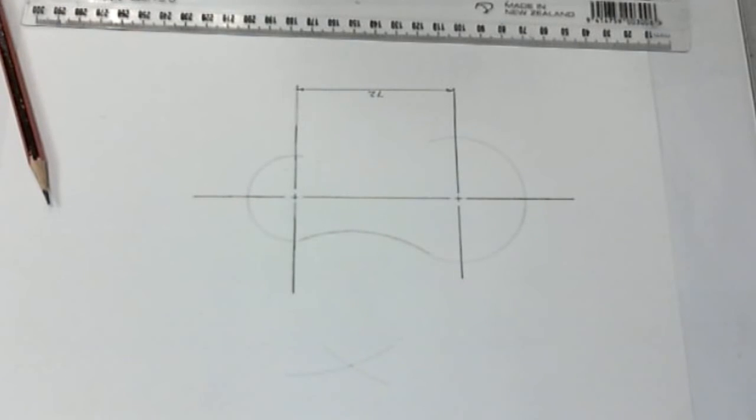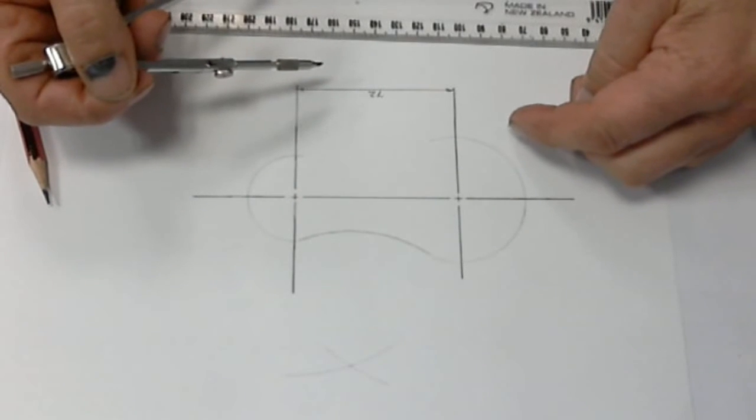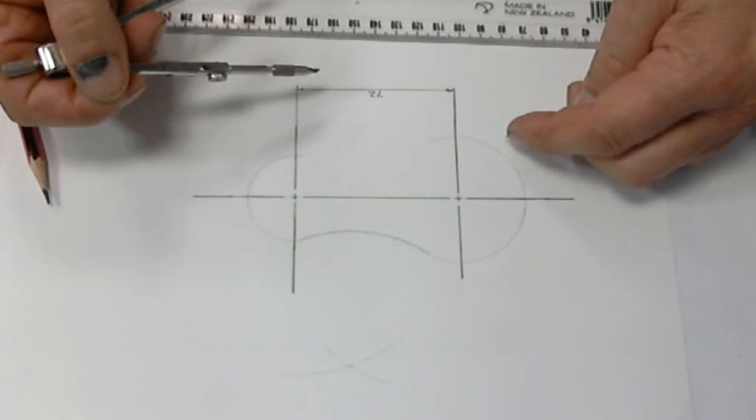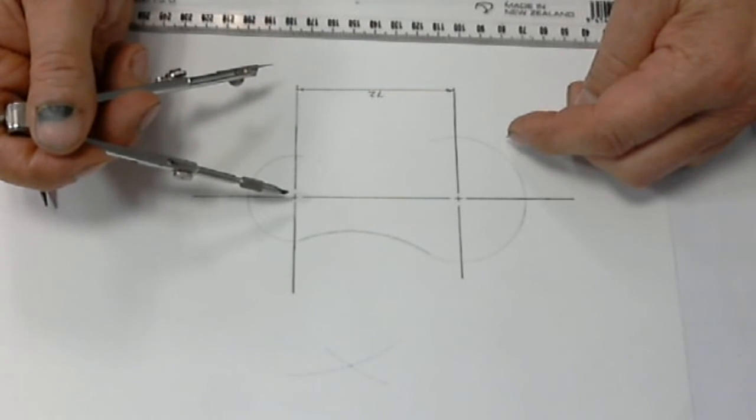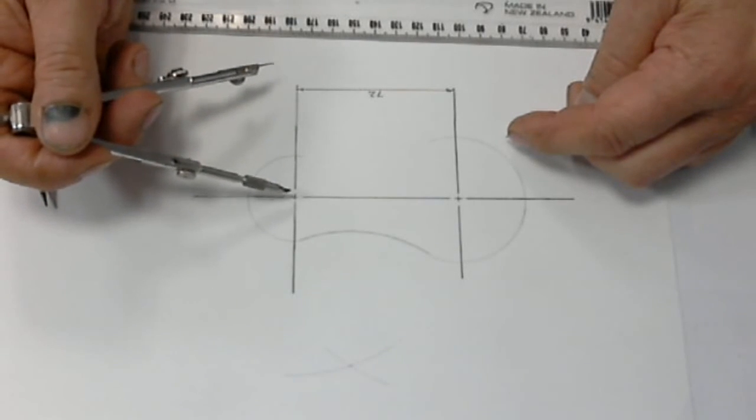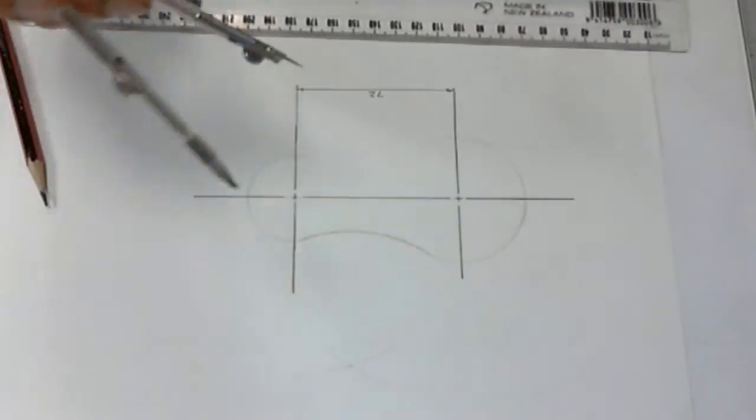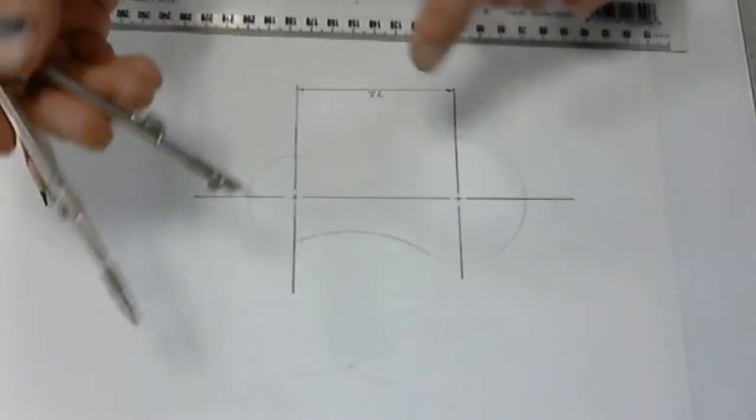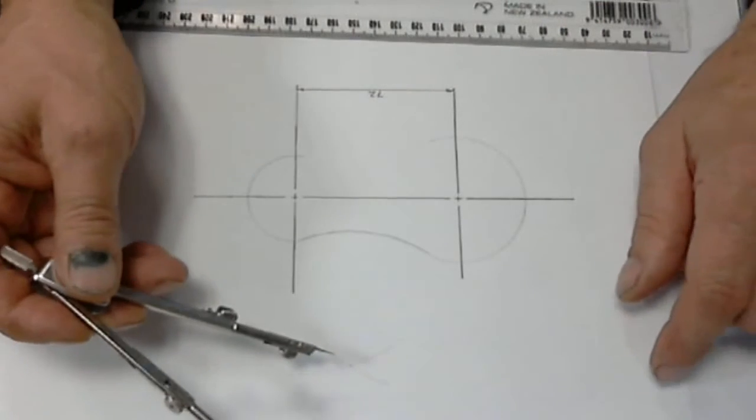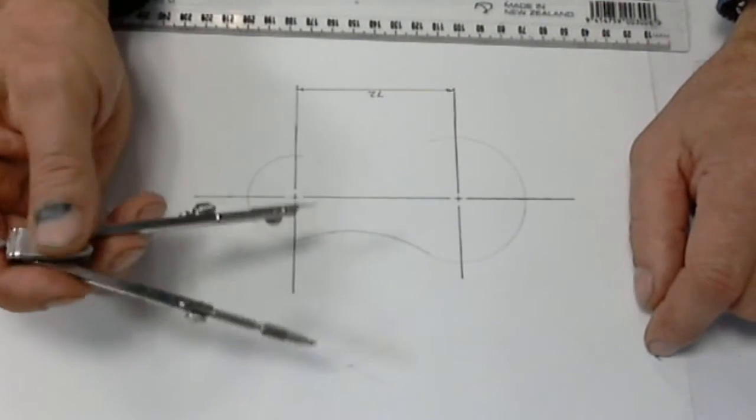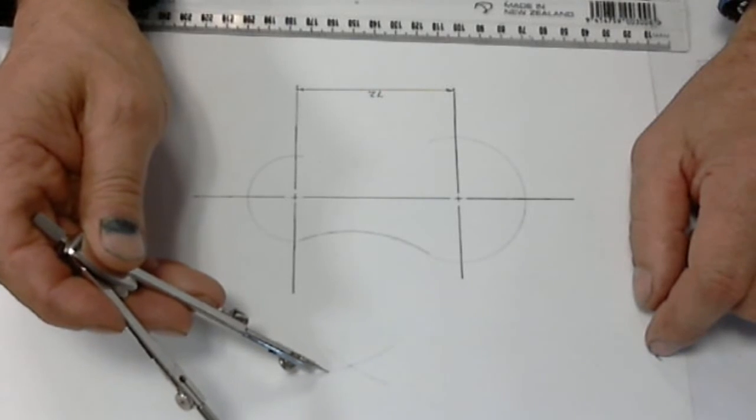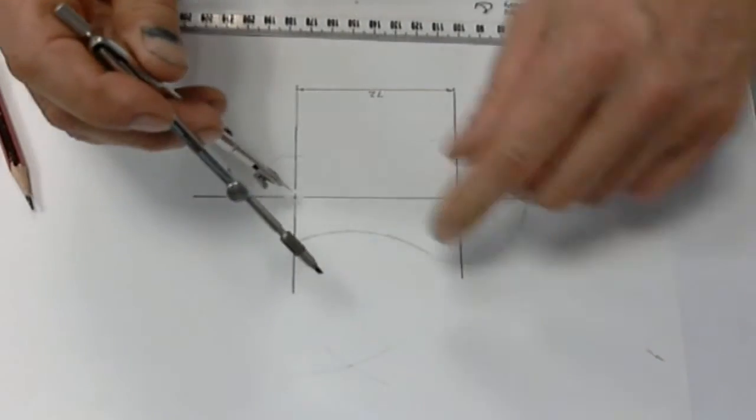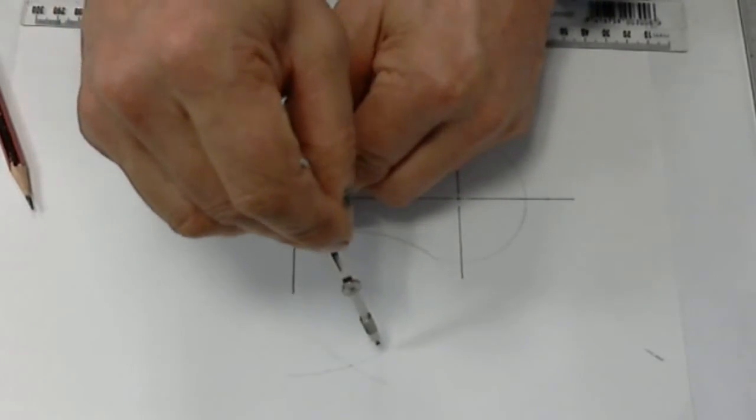Okay so the other tangent is 100 millimeters so we need to produce a center point to swing that from. Given that it's 100 we need to subtract this time so we already have the 80 millimeter arc here. I haven't actually drawn it long enough so I'll just extend that a fraction.